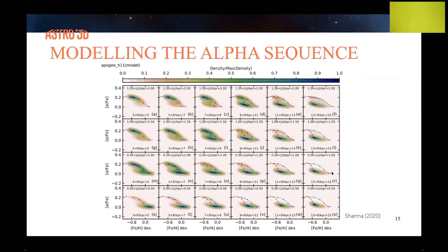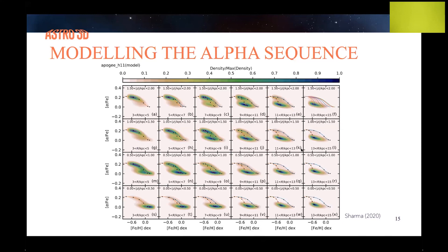Finally, I'll briefly touch on modeling. This work is being done by Sanjeev Sharma — an example of an analytical chemodynamical model combining chemical evolution and kinematics. Stars are allowed to form at different galactic radii, comingle, and enrich the ISM. From this the model predicts age, velocity, position, and abundances. Applied to the APOGEE survey, it accurately predicts what the high and low alpha sequences look like across the galaxy — very similar to the observational results. Hopefully we can apply this to GALAH as well. In conclusion, this was a brief overview of chemistry and ages in GALAH, and we're really looking forward to DR3. Thank you.